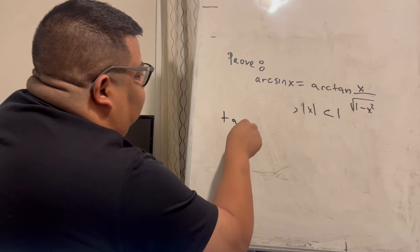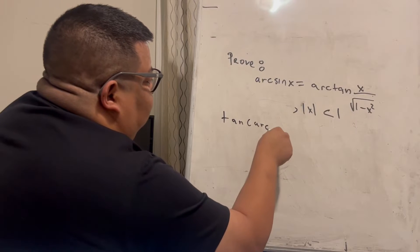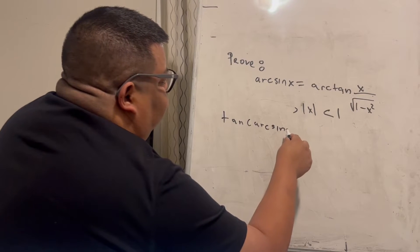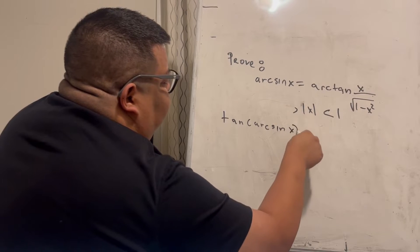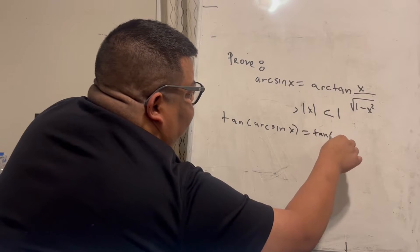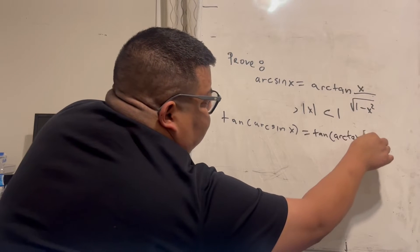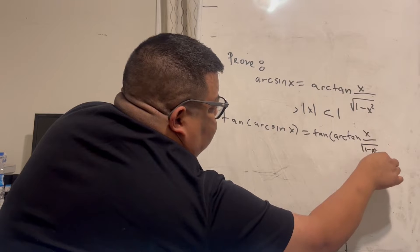So it's going to be tangent of arcsin of x is equal to tangent of arctan of x over square root of 1 minus x squared.